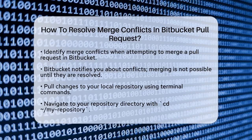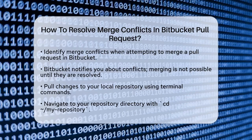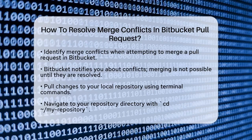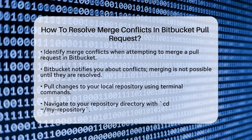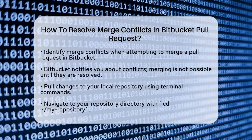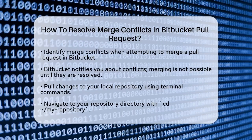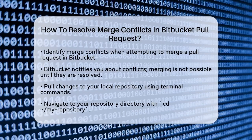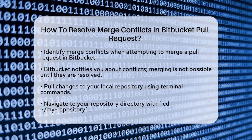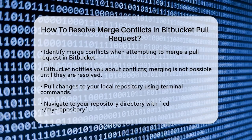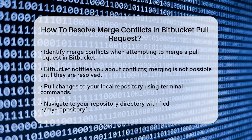First, you need to identify where the conflict is. When you try to merge a pull request, Bitbucket will notify you if there are any conflicts. You can't click the Merge button until these conflicts are resolved.